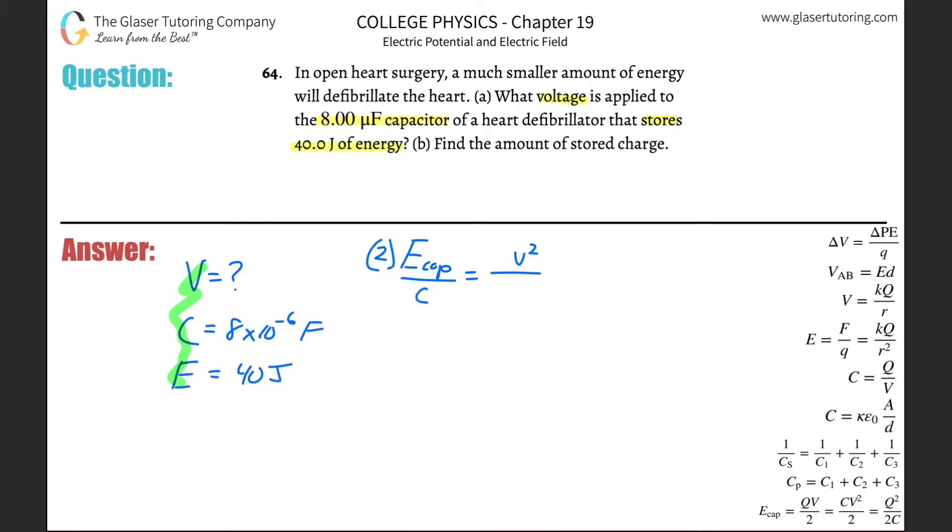So now you realize that you got this expression. Basically 2 times the energy stored in the capacitor divided by the capacitance. And then I realize that it's voltage squared. We don't want the voltage squared. We want the voltage. So square root both sides. And voila. Your formula here is going to be the square root of 2 times the energy stored in the capacitor all divided by the capacitance.